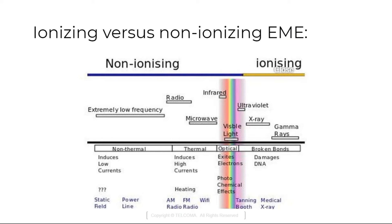This is the difference between the non-ionizing and ionizing radiation. We can see the difference: UV, x-ray, and gamma rays are under the ionizing category. Then we have visible light, infrared, microwave, radio, and extremely low frequency — they are under the non-ionizing category.